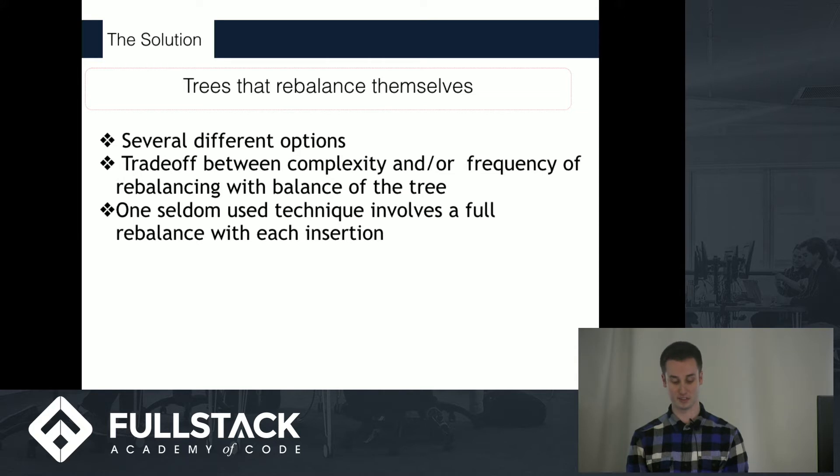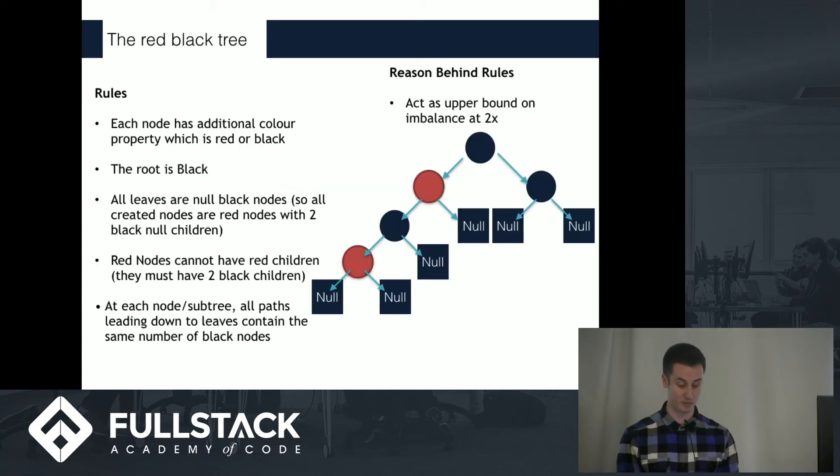There's actually several different alternatives for red-black trees, and these trade off different levels of complexity and frequency of balancing with how balanced the tree ends up being. At one extreme, every single time you insert a new node, you would completely redo the tree from scratch to ensure perfect balance. That's a very expensive operation, so we're going to be looking at red-black trees.